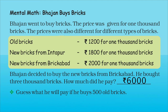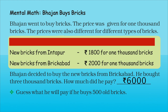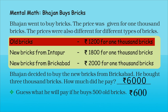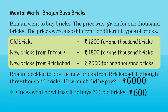Children, can you guess what he will pay if he buys five hundred old bricks? Can you do this without writing? Yes, it's so simple — we know the cost of one thousand old bricks is rupees 1,200, and for five hundred bricks he has to pay just six hundred rupees. Yes, you are right! Try to make many more questions like these and try to solve them on your own.